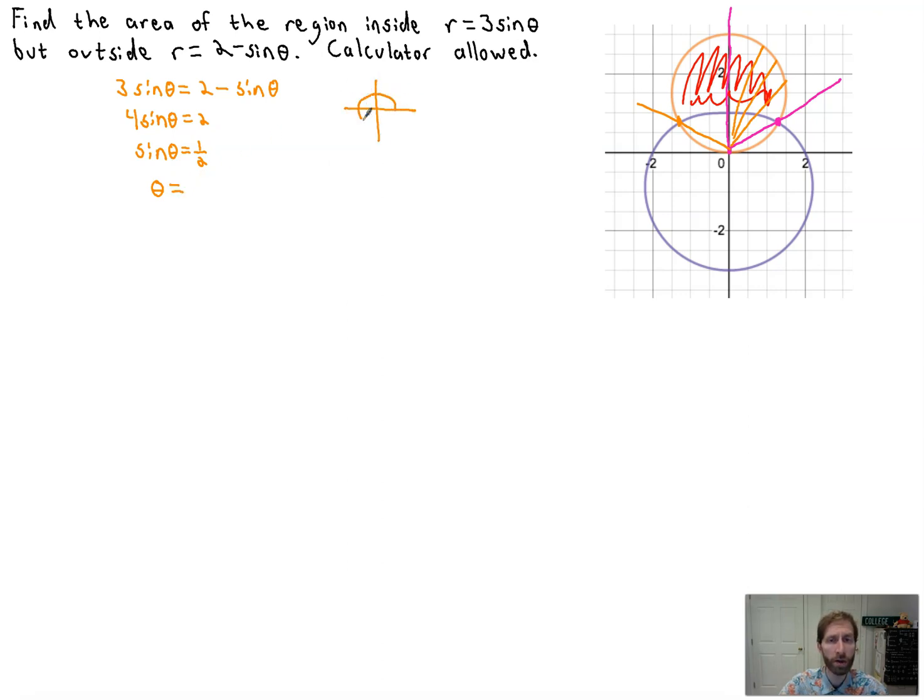So then from there, we get theta is equal to, well, a little bit of unit circle knowledge. Sine theta is 1 half here and here, right, at pi over 6 and 5 pi over 6. Okay, now why is that important? Well, a couple things. One, this value right here is pi over 2. That's pi over 6. And this is 5 pi over 6. That sets us up with our bounds.